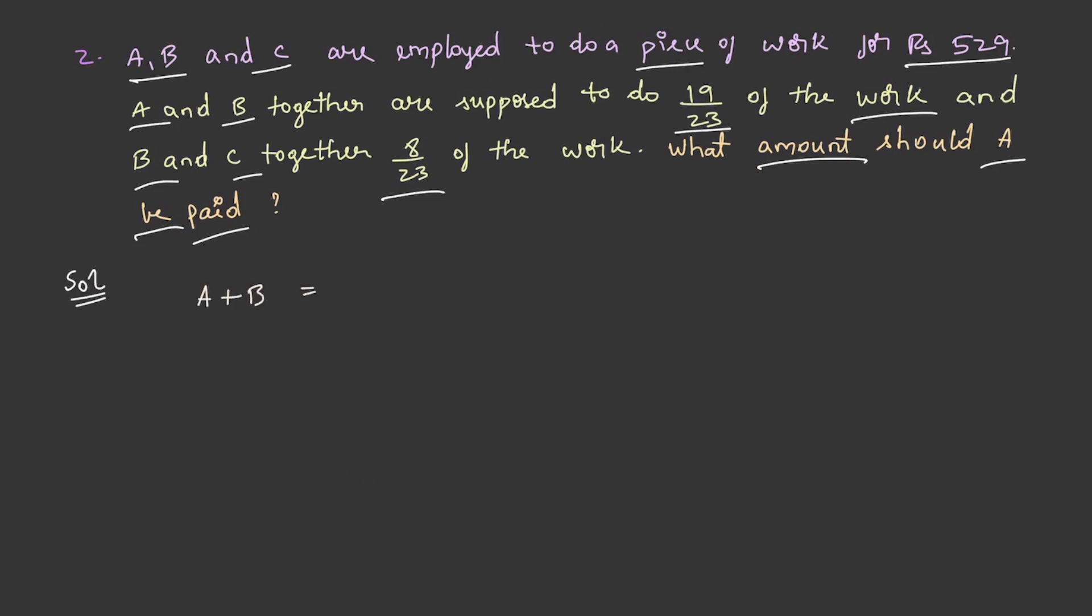A plus B, that is A and B together, had done 9 by 23 part of the work, and B plus C have done 8 by 23 part of the work. We need to find out A's share. Before knowing A's share, we need to find out work done by A. How do we figure out the work done by A?